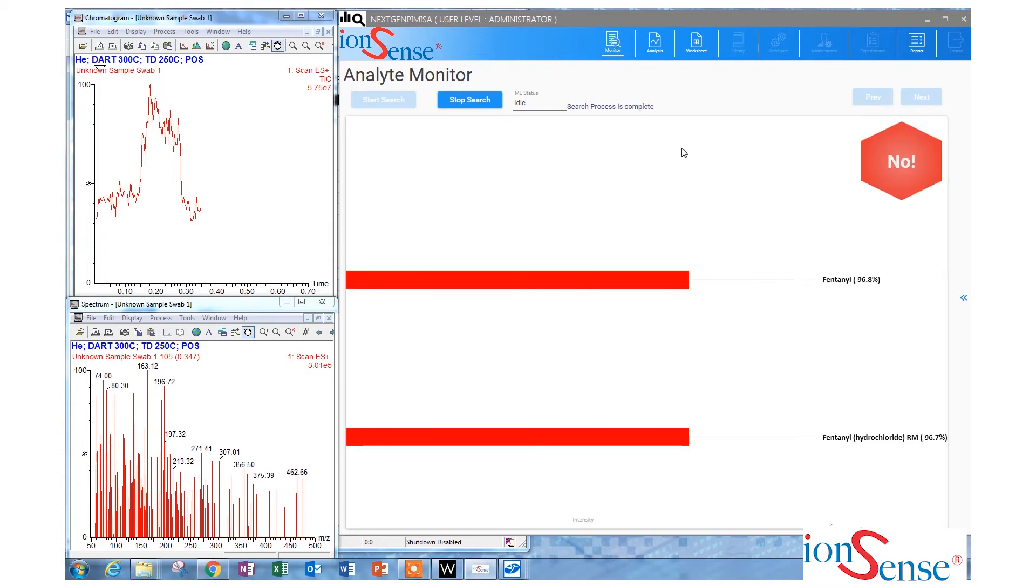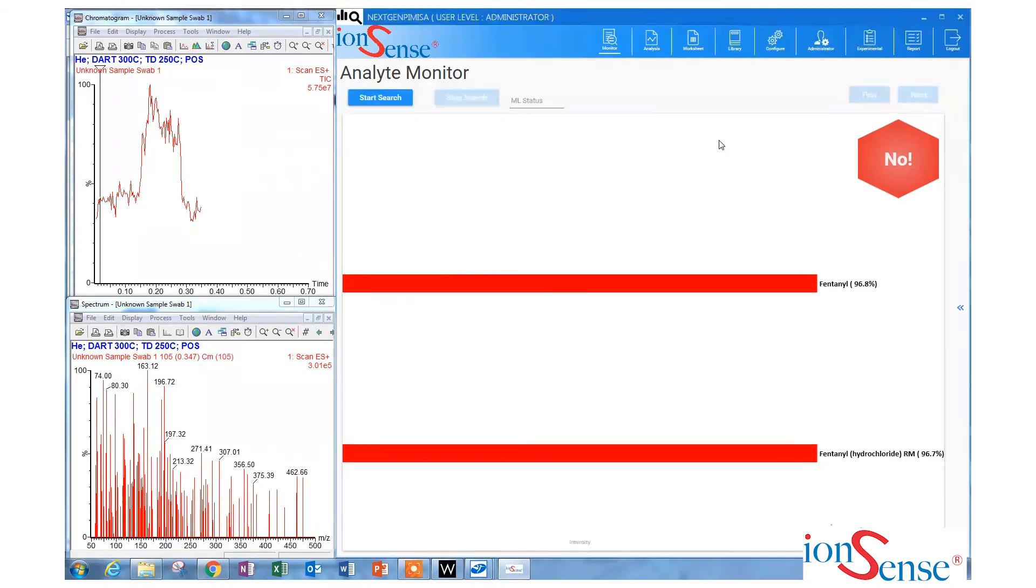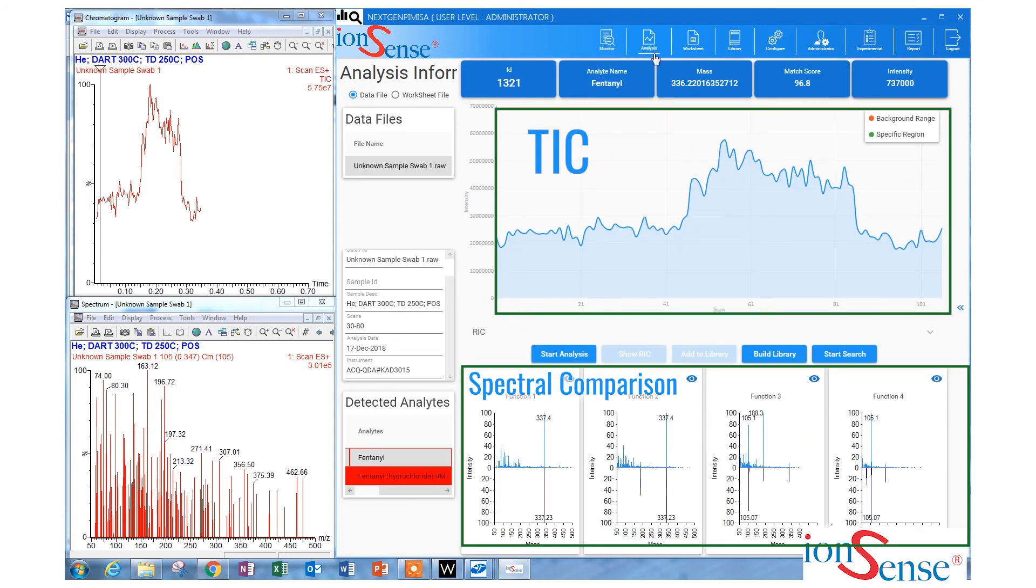the identified drugs and the matched probabilities are shown in a basic red light text display. In the analysis screen, you can also view the total ion chromatogram and mass spectral comparison, as well as the reconstructed ion chromatogram, or RIC, of the identified drugs.